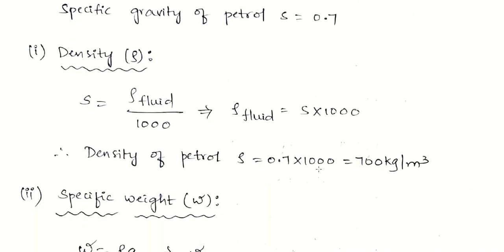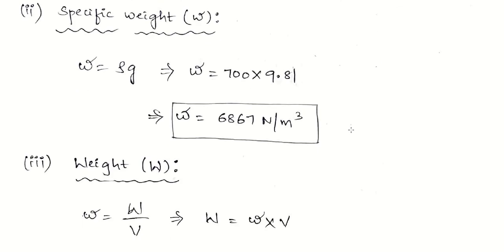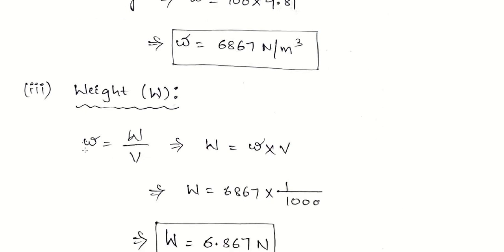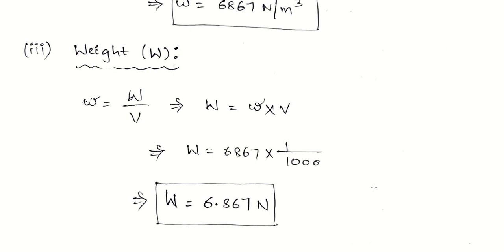For specific weight, since weight is unknown, use w = rho × g = 700 × 9.81 = 6867 N/m³. Then to find weight, rearrange the original formula: W = w × V = 6867 × (1/1000). This is how you solve problems by cycling through the available formulas based on what is known.